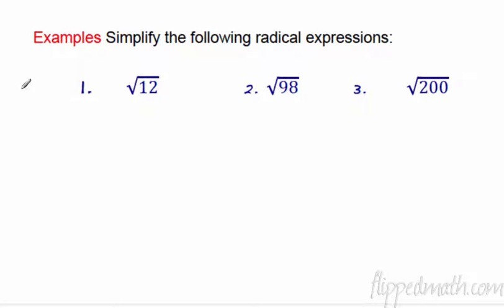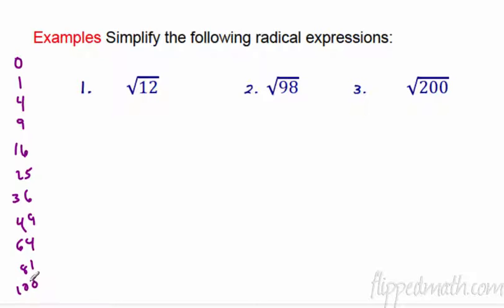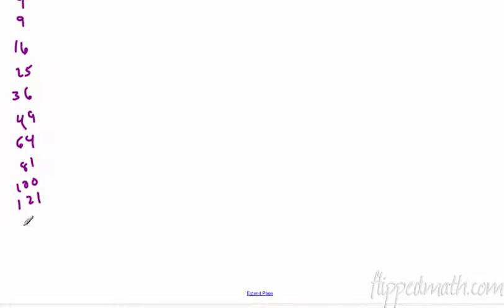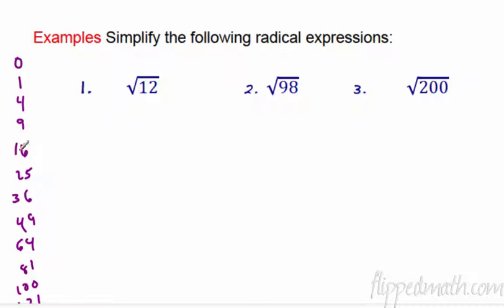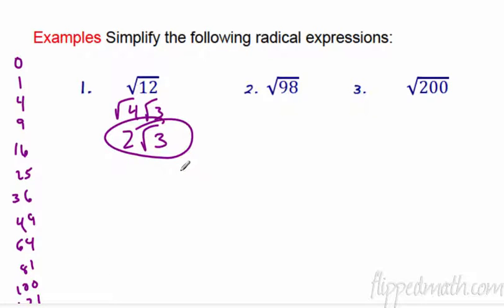Square root of 12. I'm going to write the list this time. 0 times 0 — we'll never use that, or 1 times 1. The list is generated by perfect squares. Going up to 200 for another problem. After 100 comes 11 times 11, 12 times 12, 13 times 13, 14 times 14, 15 times 15 is 225. So for 12: is 9 a factor? No. Is 4? Yes. So write the 4 down — 4 times 3. Radical 4 turns into a 2. So it's 2 radical 3. Done. Two steps.